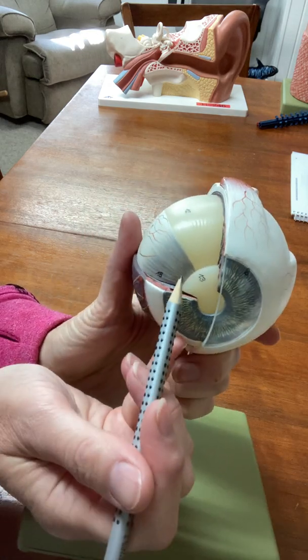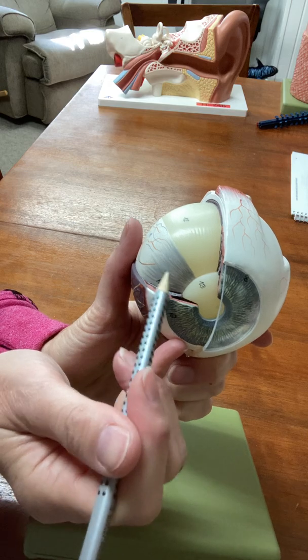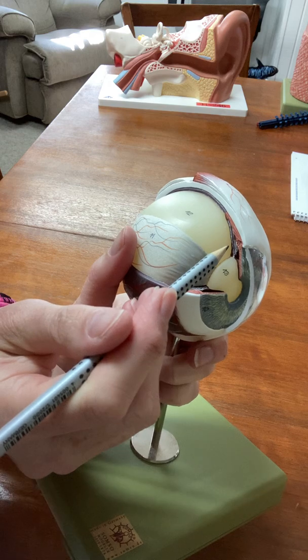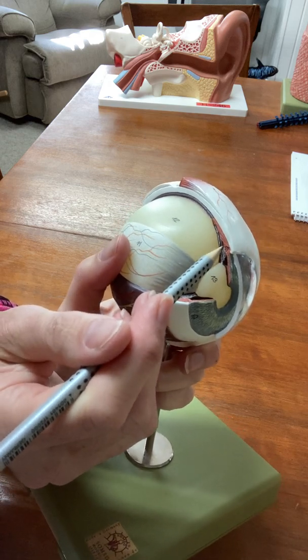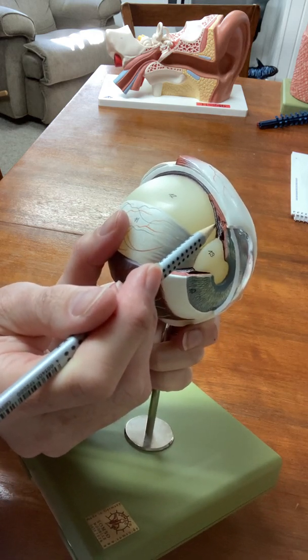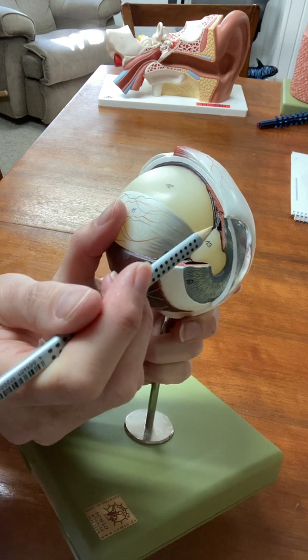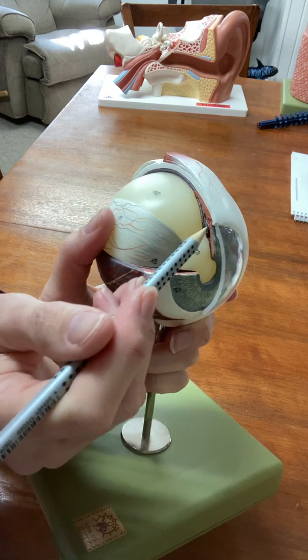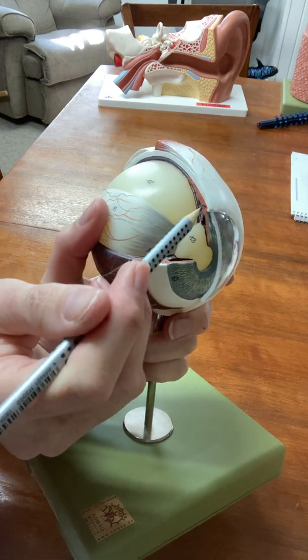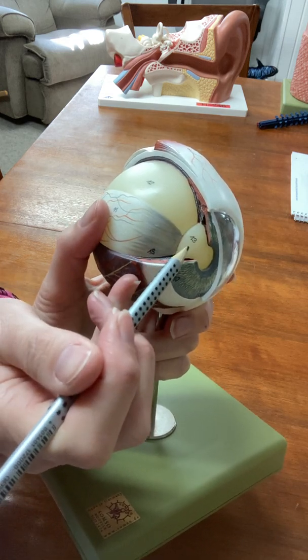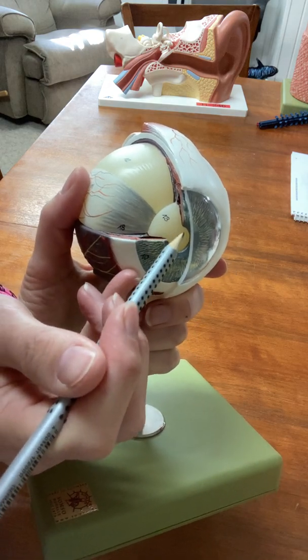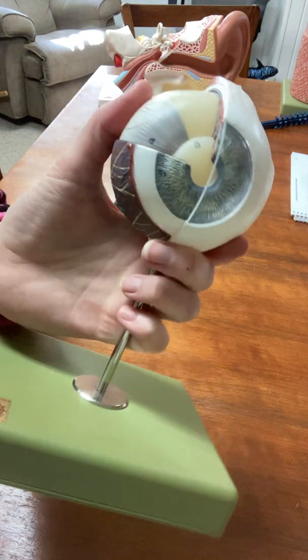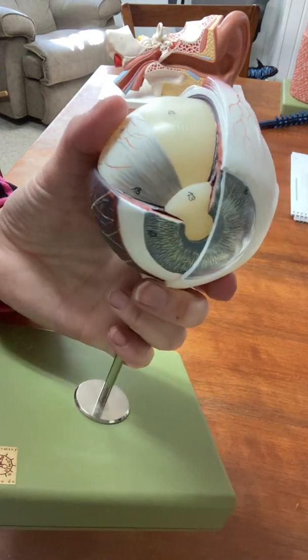The first one, the thick part here, is the ciliary body. And you see these white strings, if you turn the eye this way you could see the white strings. There's a number 18 on them, those are called the suspensory ligament. I just noticed suspensory ligament is not on your list so pretend I didn't say that, but they attach the ciliary body to the lens.